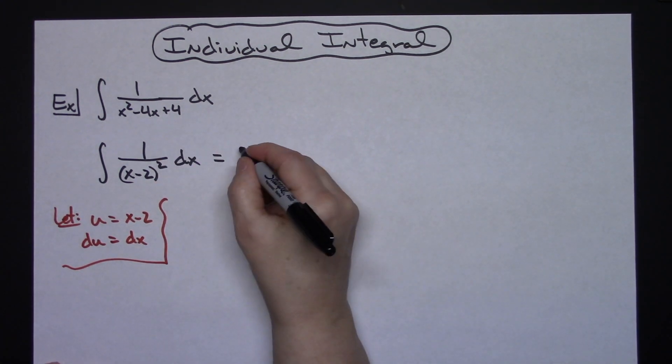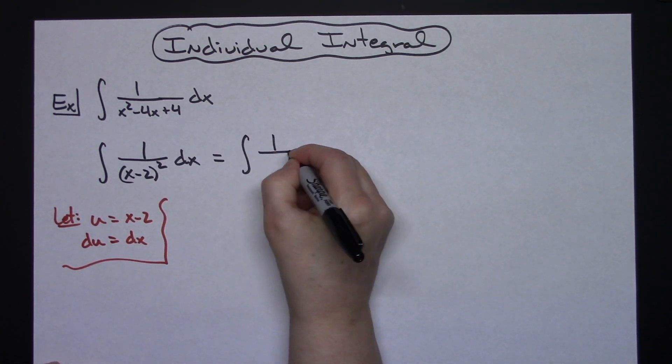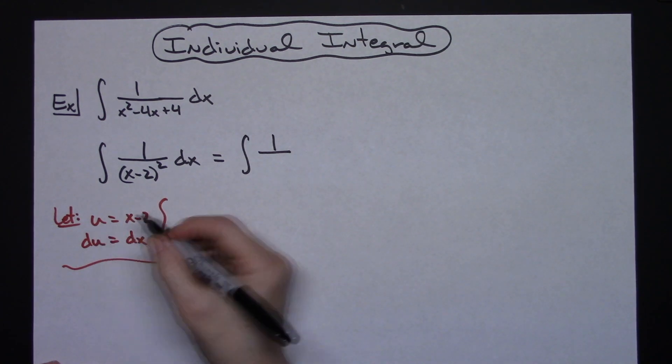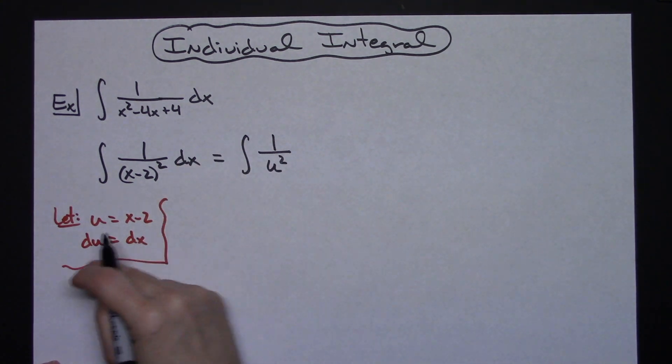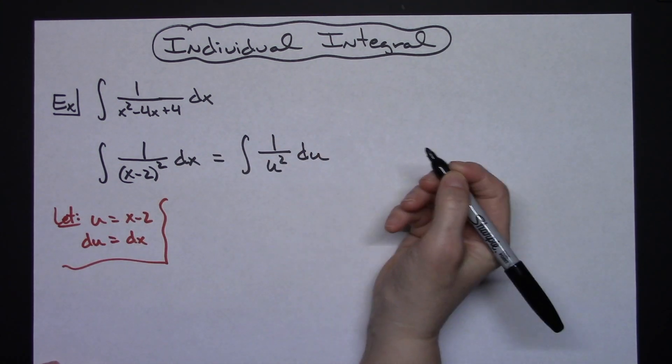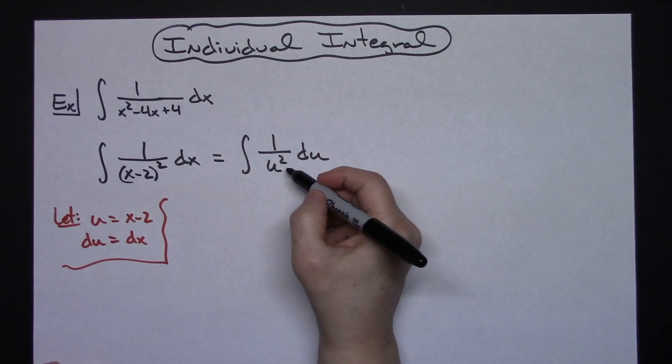Substituting u for x minus 2, I have the integral of 1 over u squared, and substituting du for dx, I have du. From here, it's pretty straightforward.